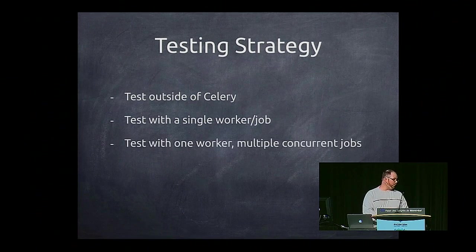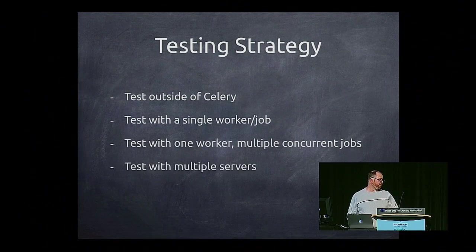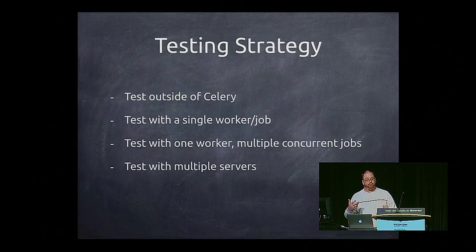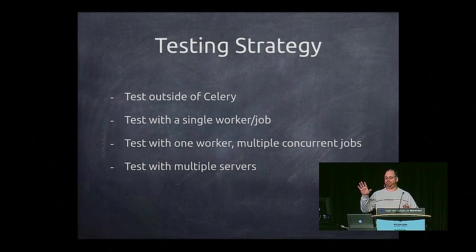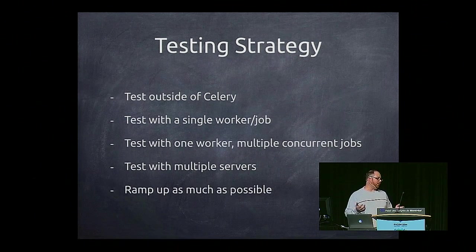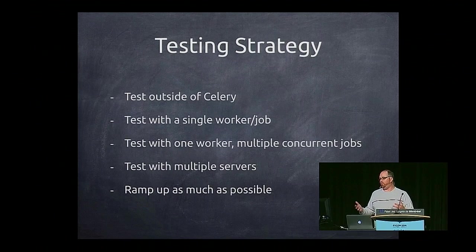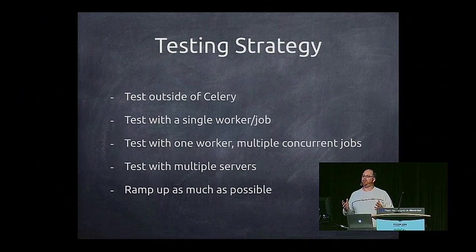Next, test with one worker that has multiple concurrent jobs. This is when we start to see if there are any problems with stuff running simultaneously — maybe some race conditions, maybe some bad assumptions. And then start to test with multiple servers. This is when I really start to see if I'm having race conditions or making assumptions, like with that one file, two tasks problem where data gets saved in the wrong place. Ramp up as much as possible — if you can do two, four, eight workers, that can really help you identify race conditions that you may not be able to find otherwise.